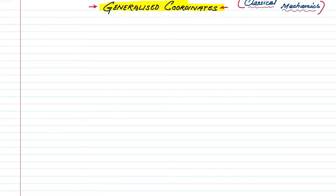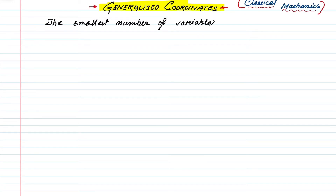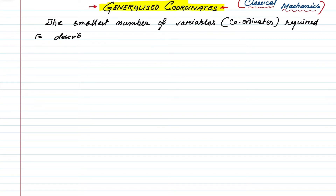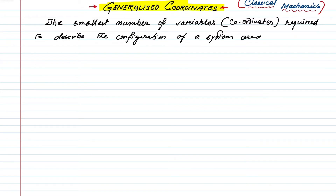Today in this video we are going to discuss about generalized coordinates. The smallest number of variables, or coordinates, required to describe the configuration of a system are called generalized coordinates.